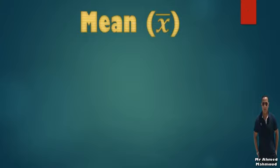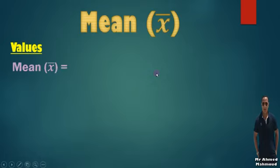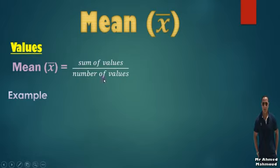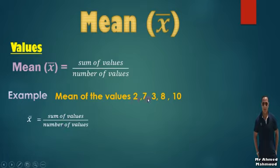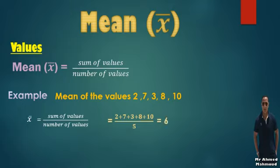Before entering dispersion, we need to remember the mean, the mode, and the median. The mean, which we call x-bar this year, equals the sum of values over the number of values. For example, to find the mean of 2, 7, 3, 8, and 10: x-bar equals (2 + 7 + 3 + 8 + 10) over 5, which equals 6. This is the mean of some values.